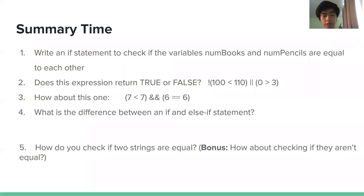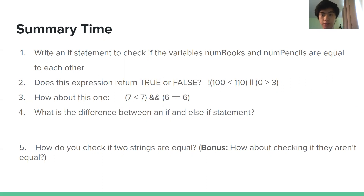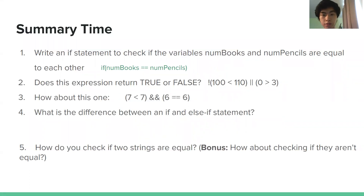First off, we'll review the summary questions from last time. Number one: write an if statement to check if numbooks and numpencils are equal to each other. We can assume numbooks and numpencils are going to be integers — number of books, number of pencils. So we write the if statement like this: if numbooks equals equals numpencils. We use equals equals to check if numbers are equal to each other, and it'll also work with doubles.